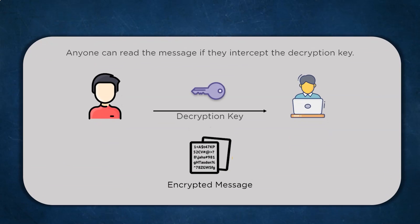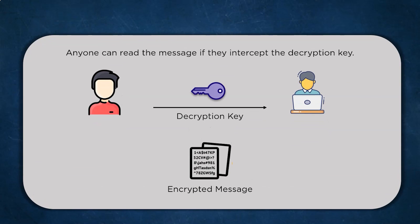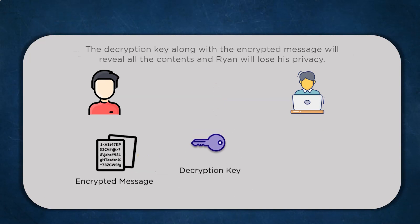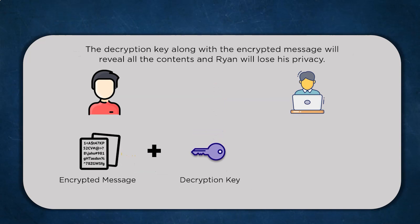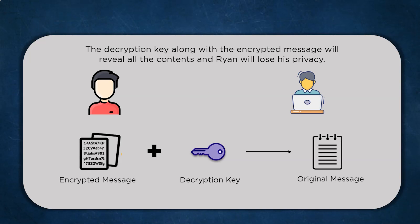How will Joe send the required decryption key to Ryan? The sender and the receiver need to have the same decryption key so that they can exchange messages. Otherwise, Ryan cannot decrypt the information even when he receives the ciphertext. If someone intercepts the key while transmitting it, there is no use in employing cryptography since a third party can now decode all the information easily. Key sharing is a risk that will always exist when symmetric key cryptography is being used.